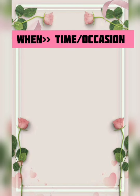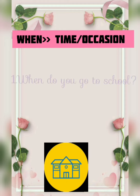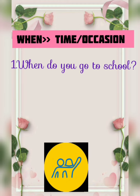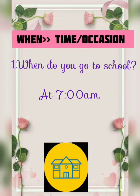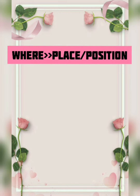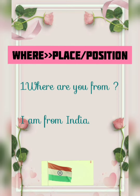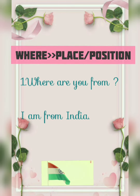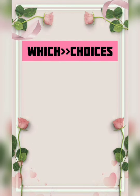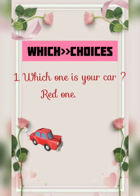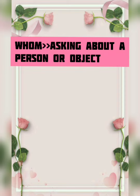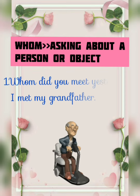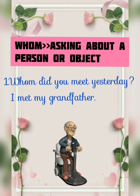When is used to know the time and occasion. Example: When do you go to school? At 7 a.m. The question Where is asked to know the place and position. Example: Where are you from? I am from India. Which is asked for choices. Example: Which one is your car? Red one. Whom is used when we are asking about a person or an object. Example: Whom did you meet yesterday? I met my grandfather.